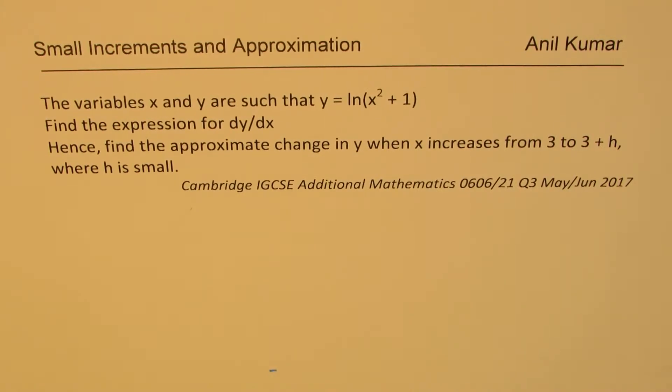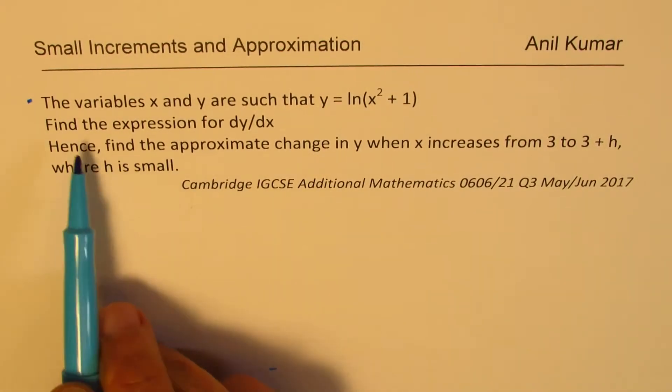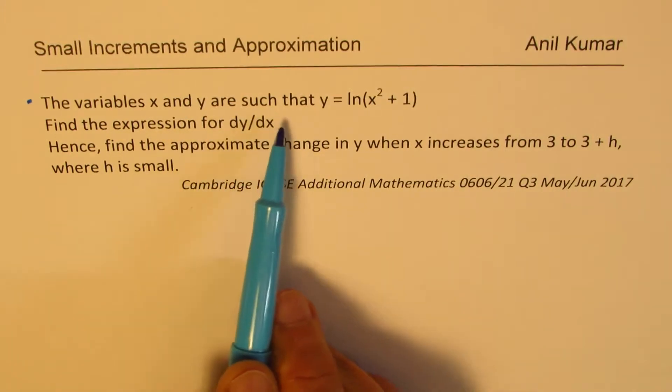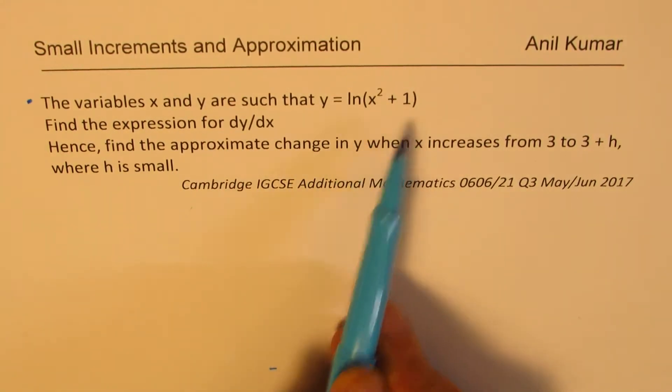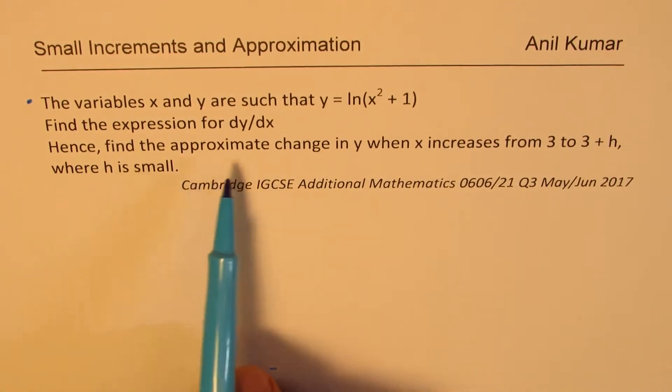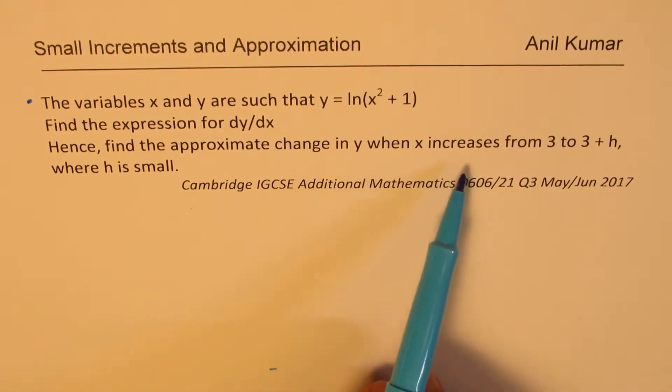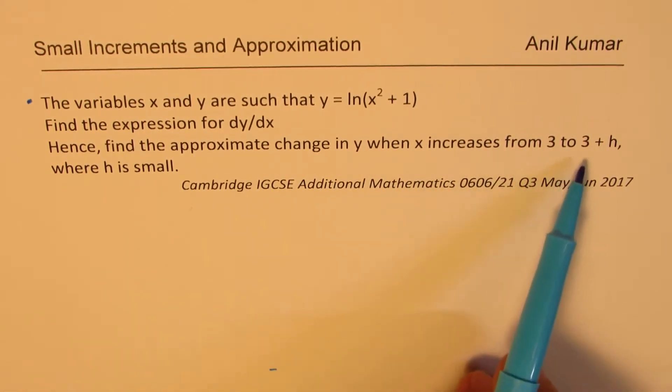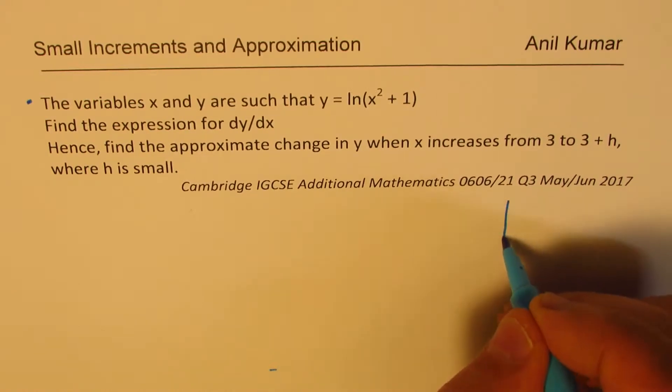Here is a question from Cambridge IGCSE Additional Mathematics, question number 3, paper 2017. We'll talk about small increments and approximations. The variables x and y are such that y equals ln(x² + 1). Find the expression for dy/dx. Hence find the approximate change in y when x increases from 3 to 3 + h where h is small.